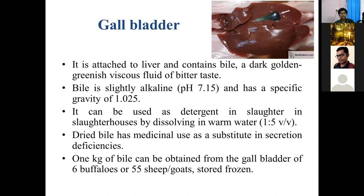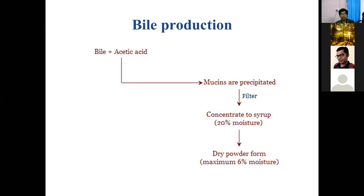The gallbladder is attached to the liver and contains bile, which is dark golden-greenish and viscous with an alkaline pH and specific gravity of 1.0 to 1.05. In slaughterhouses, gallbladders are used as detergent due to their alkaline pH and foamy action. Dried bile also has medicinal purposes for patients with bile deficiency. One kilogram of bile can be obtained from 6 buffalo or 55 sheep or goats. For bile production, bile is treated with hydrochloric acid, mucins are precipitated and filtered, concentrated to 20% moisture, then vacuum dried to a powder with maximum 6% moisture.